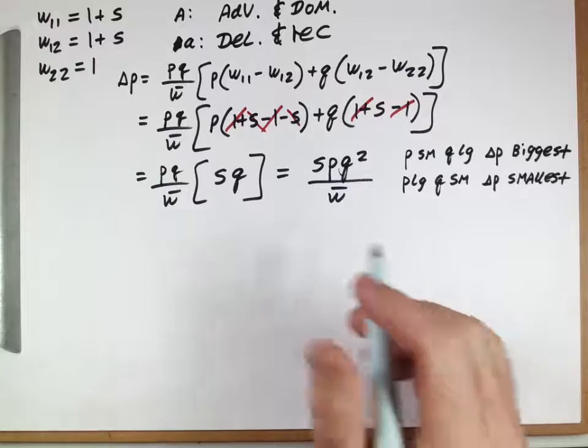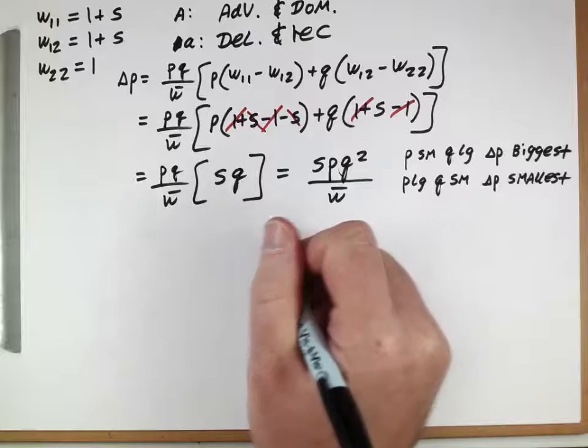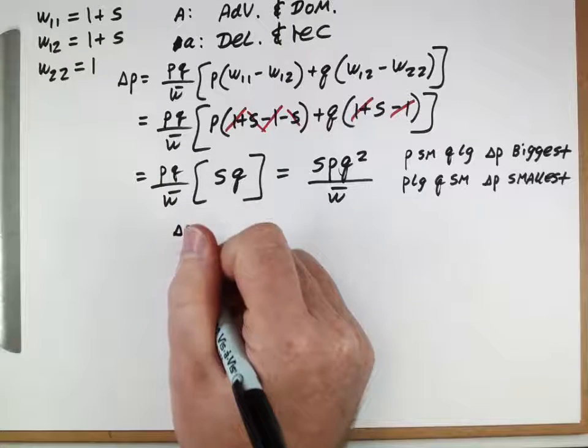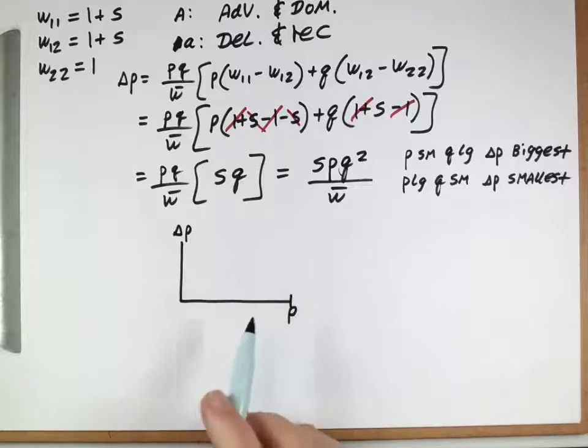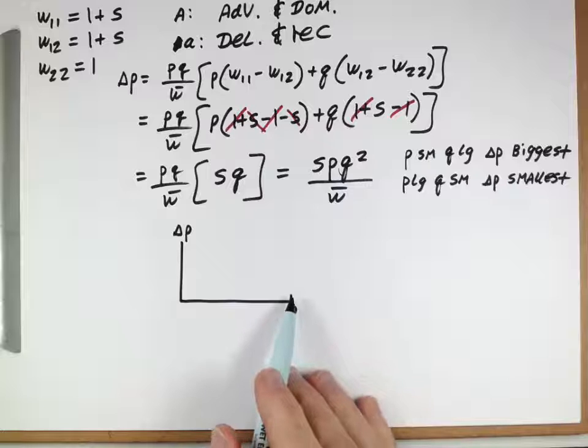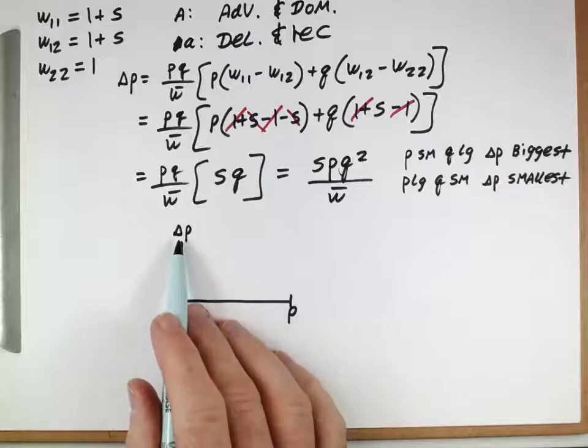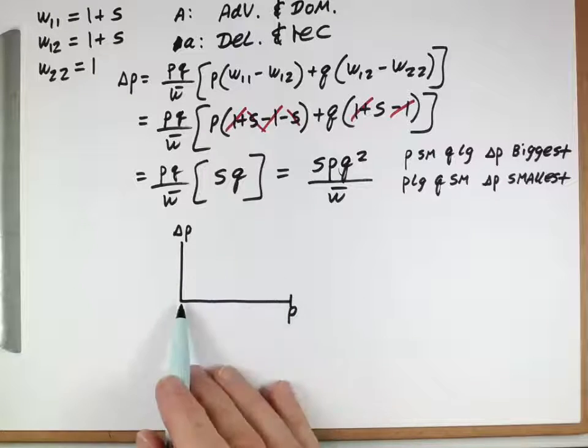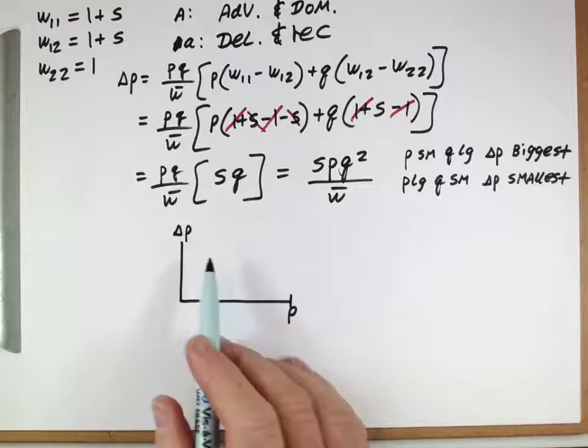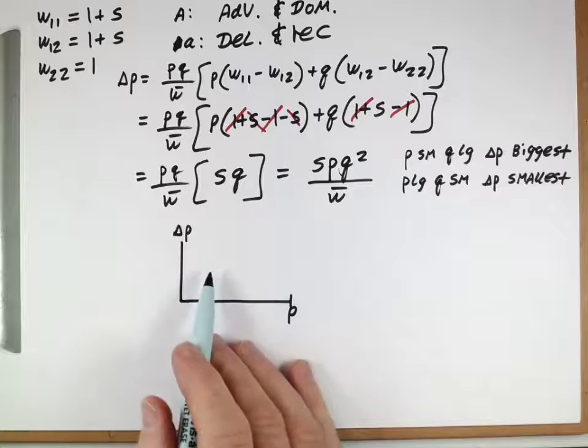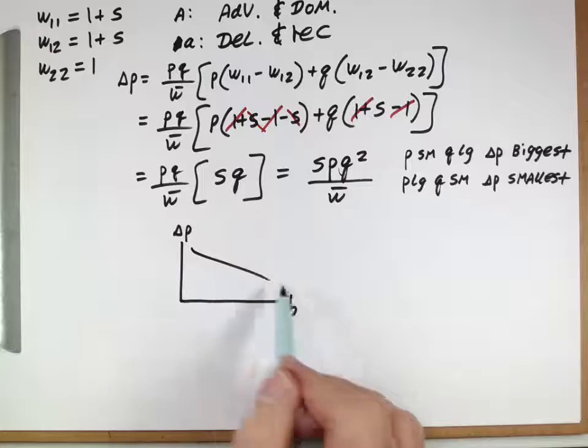And what that's going to look like in terms of what is the value of delta P versus P, right? So, when P was small, this is the largest. And when P was large, this was the smallest. So, there would be some sort of relationship in here where something like this.